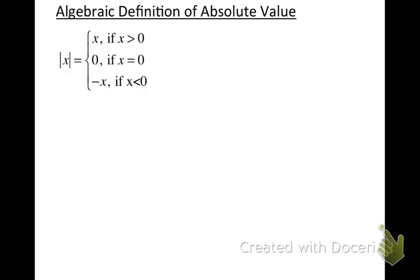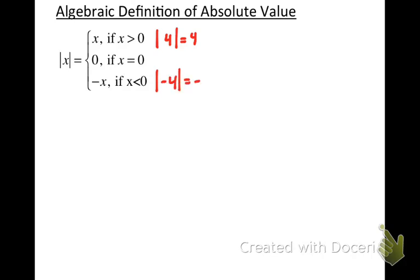Quick examples to remind you from the previous video: if I have the absolute value of a positive number, I'm getting the same number as a result. And if I take the absolute value of a negative number, the resulting absolute value is the opposite of that number I started with. Because we always get a positive value every time we take an absolute value — those two numbers were opposites.